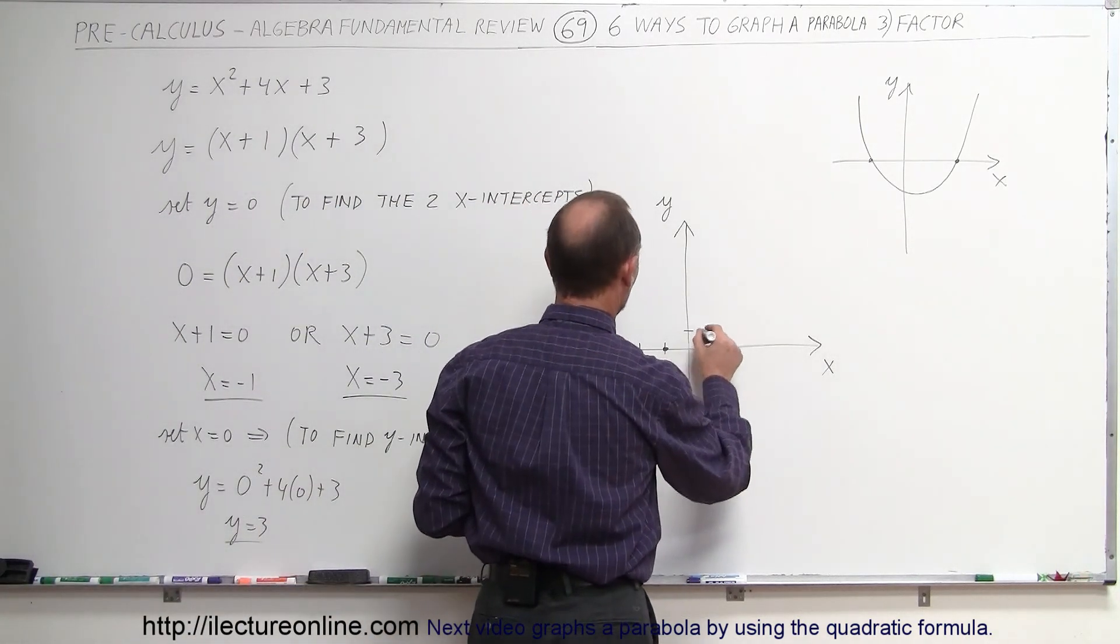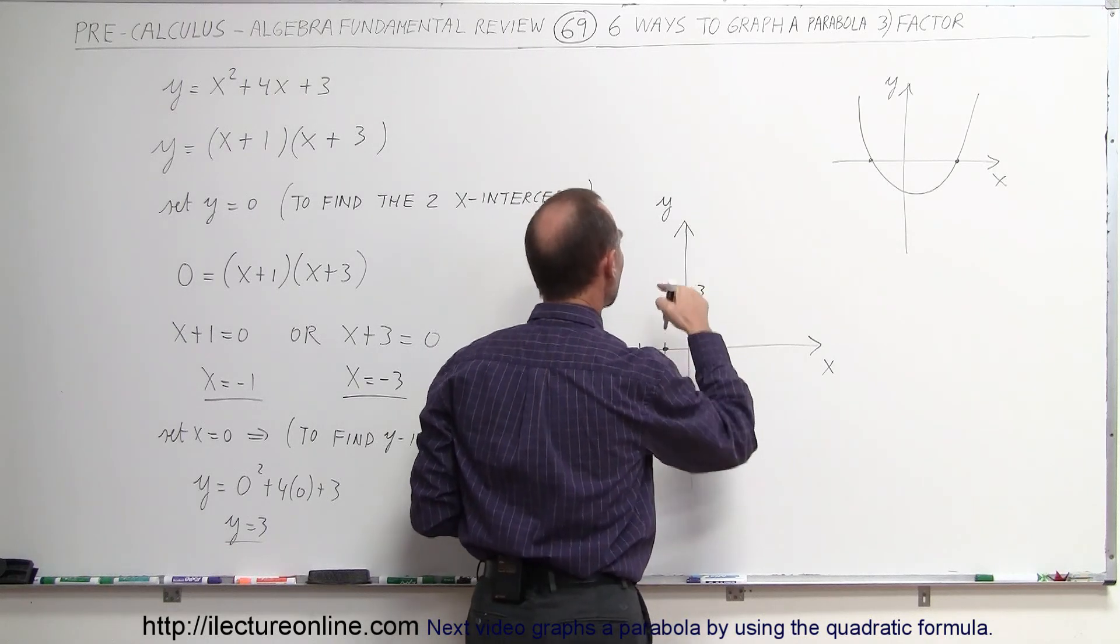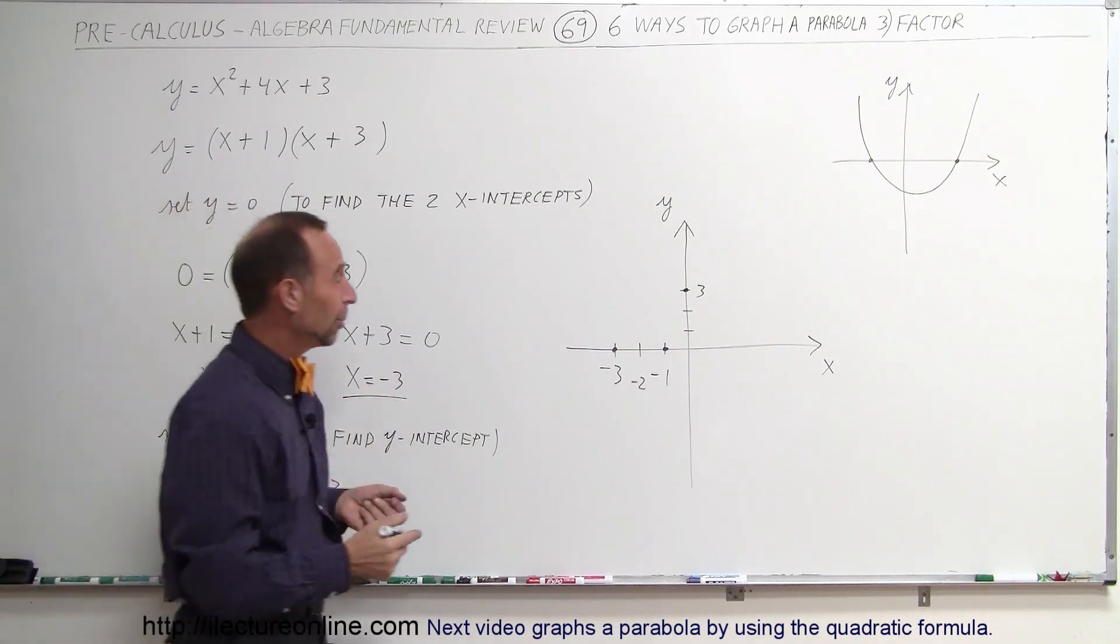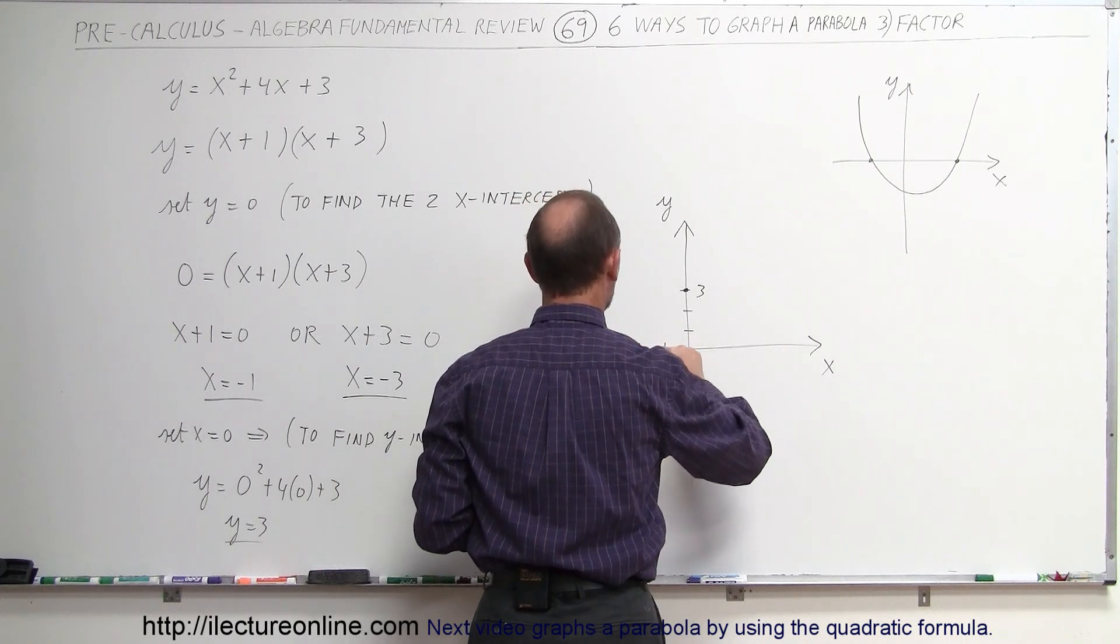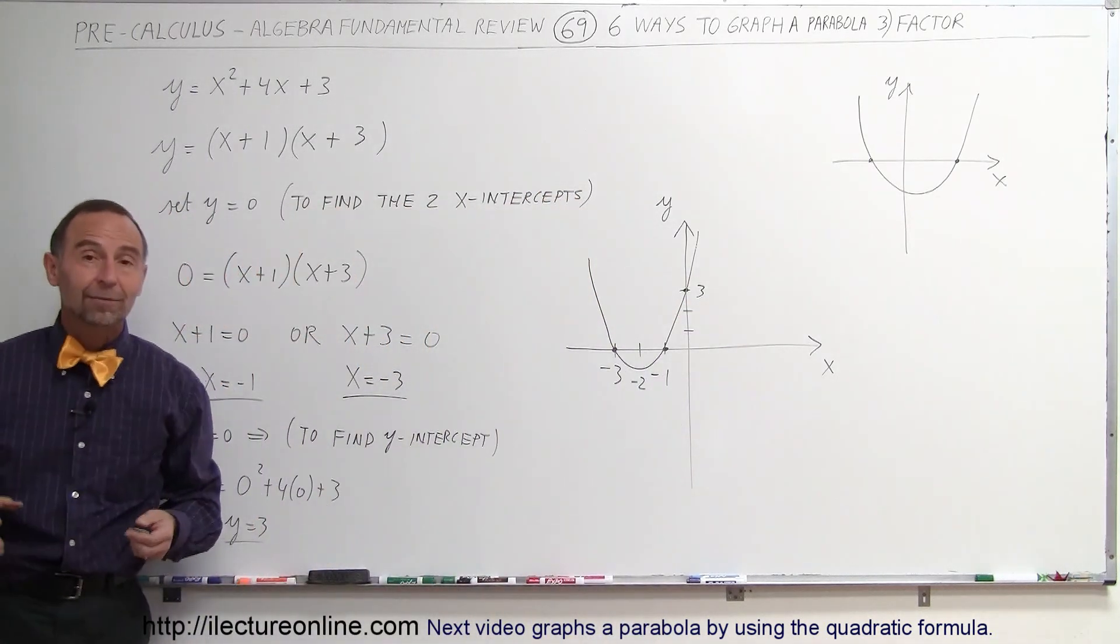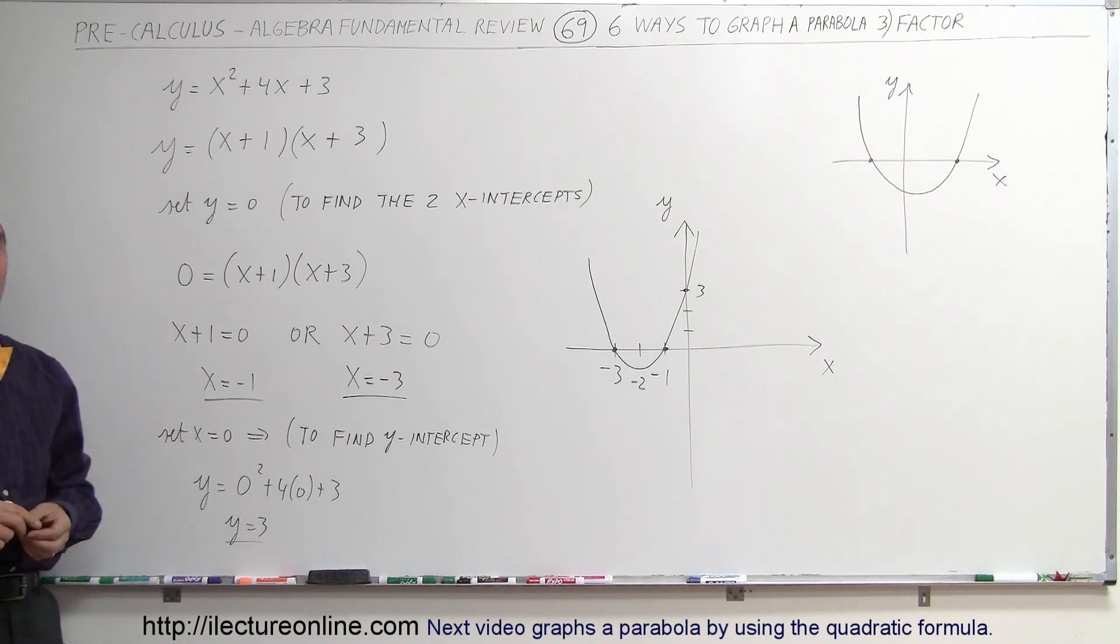So when x equals zero, one, two, three, there we go, three, we know that the parabola also crosses that point. Now we have three points, we know it opens upward, so it becomes fairly easy to graph this parabola, and it looks like that. And that's how we do that, by simply factoring and finding what we call the solutions to the parabola, the places where the parabola crosses the x-axis. That's how it's done.